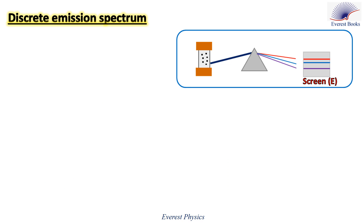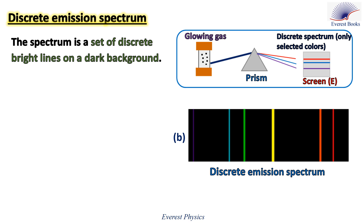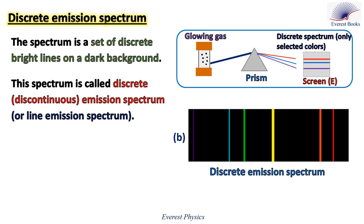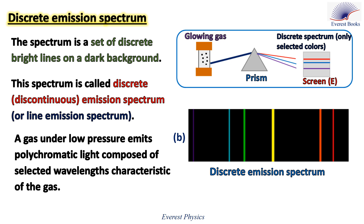Now let's move to the discrete emission spectrum. In a dark room, the light emitted from a glowing gas under low pressure falls on a prism, emerges separated, and falls on a screen. The spectrum is a set of discrete bright lines on a dark background. This spectrum is called the discrete, discontinuous, or line emission spectrum. A gas under low pressure emits polychromatic light composed of selected wavelengths characteristic of the gas. Each gas has its own set of spectral lines.